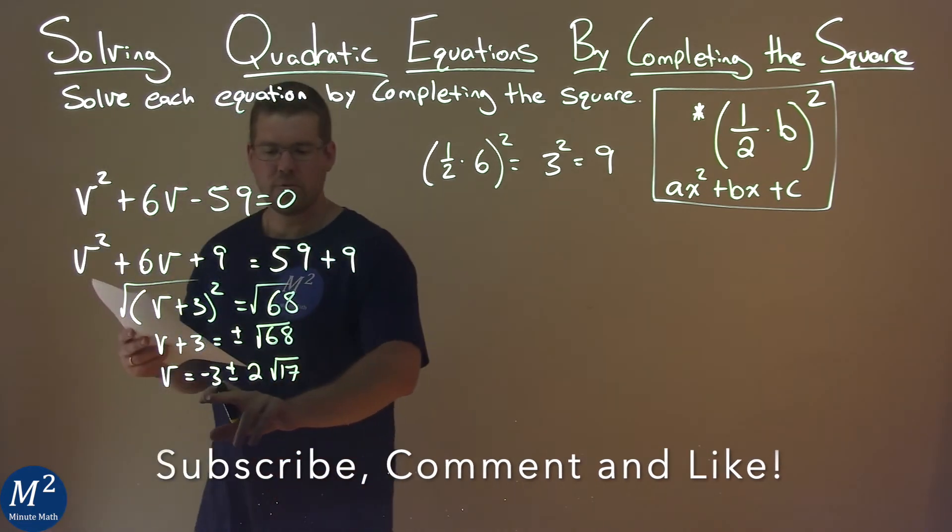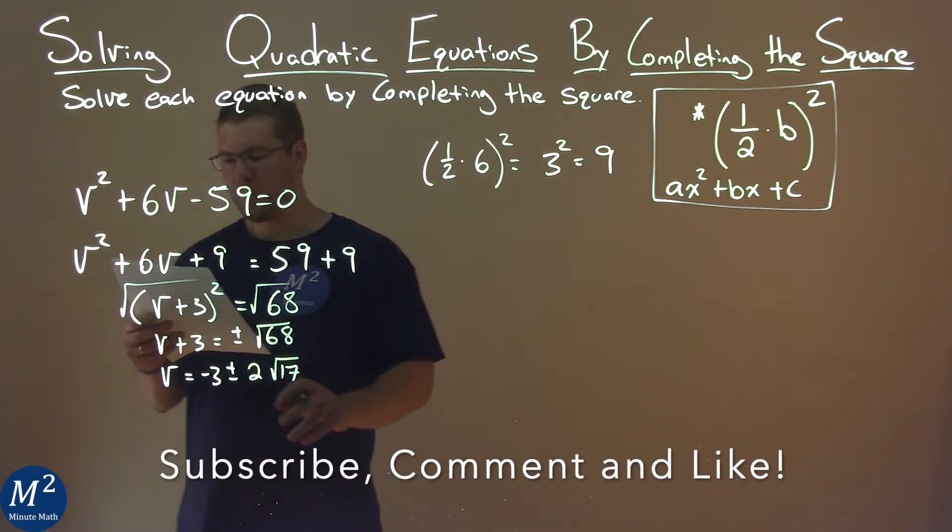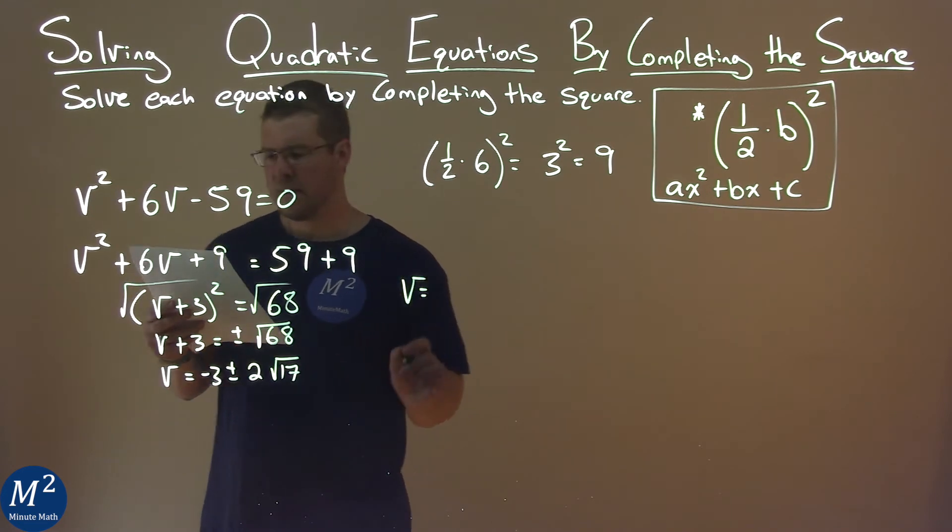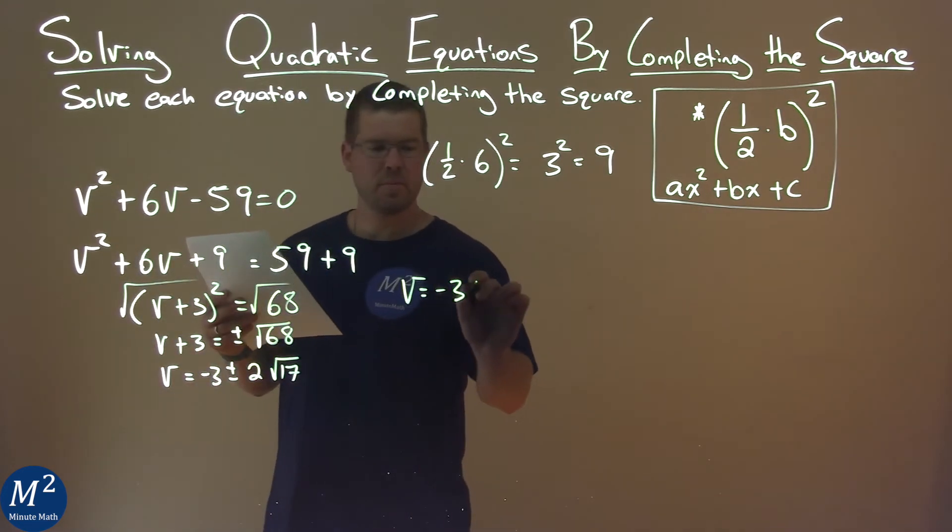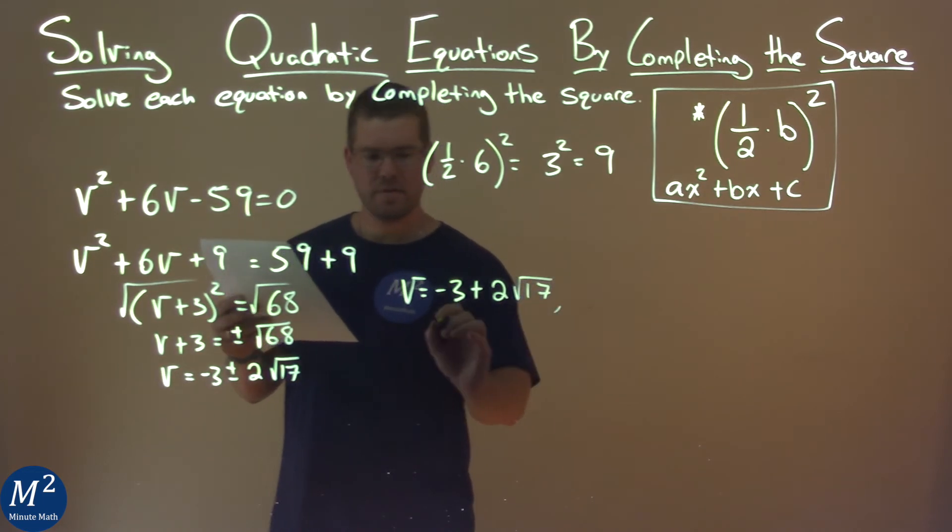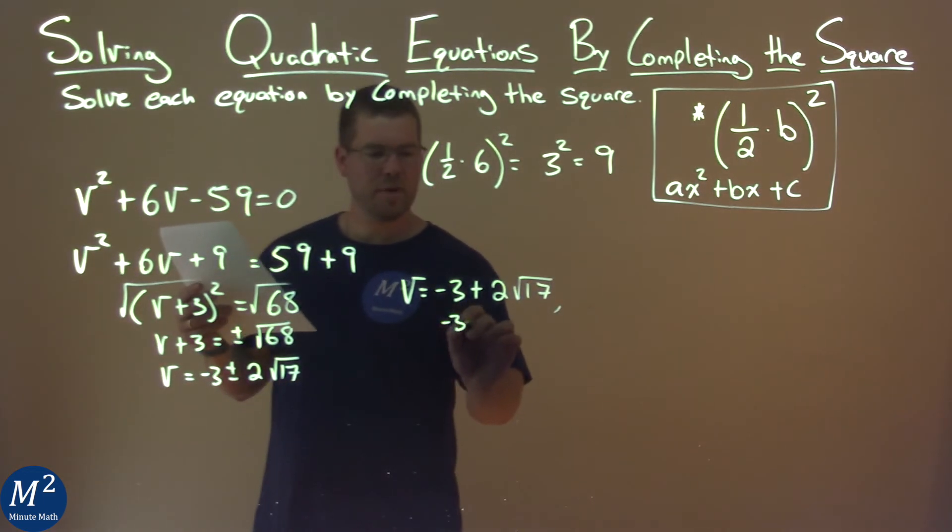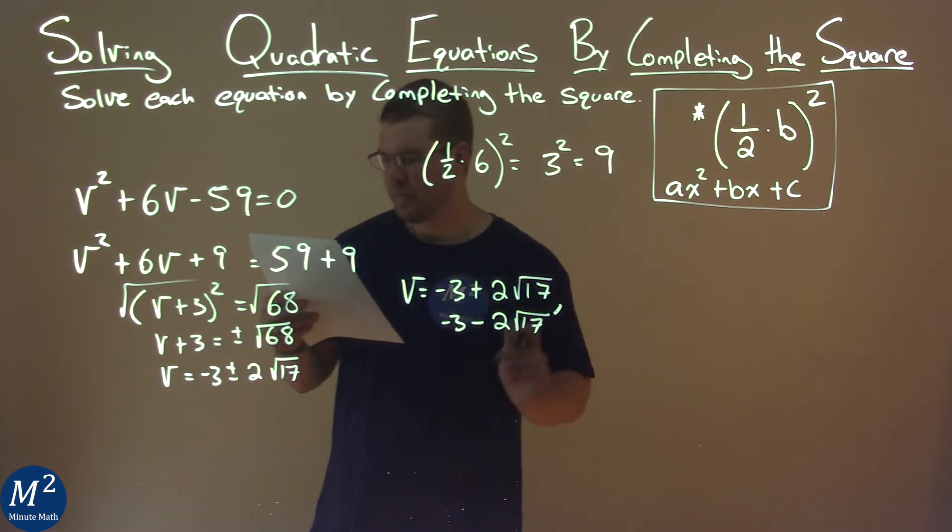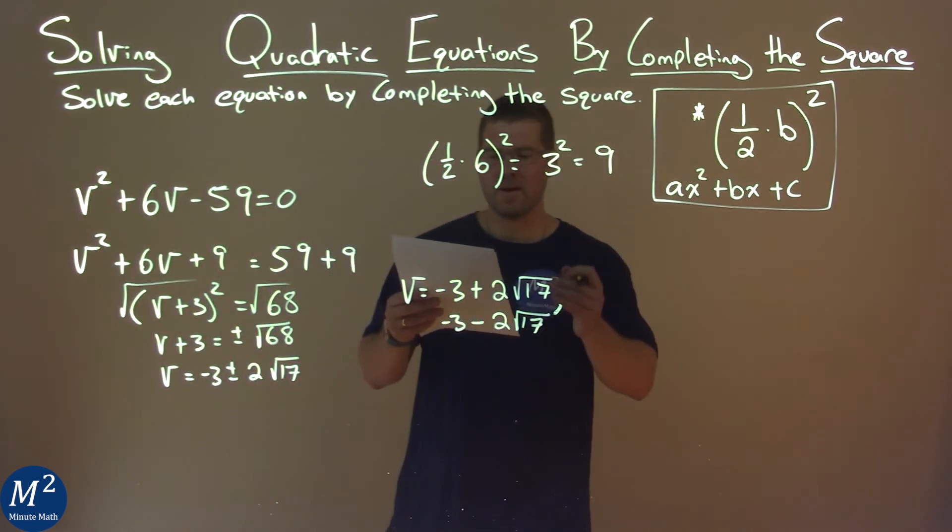Now we have our answer in plus or minus form with the square root. We can write them individually: v = -3 + 2√17, and v = -3 - 2√17. That is our final answer.